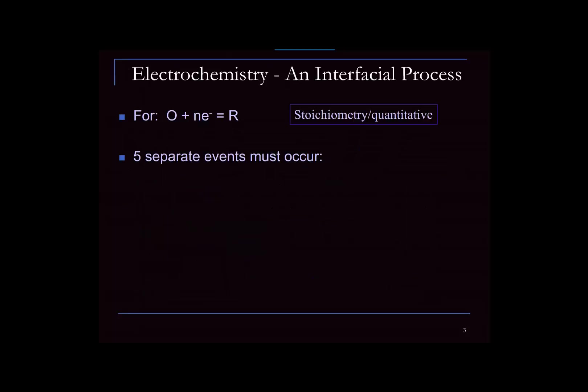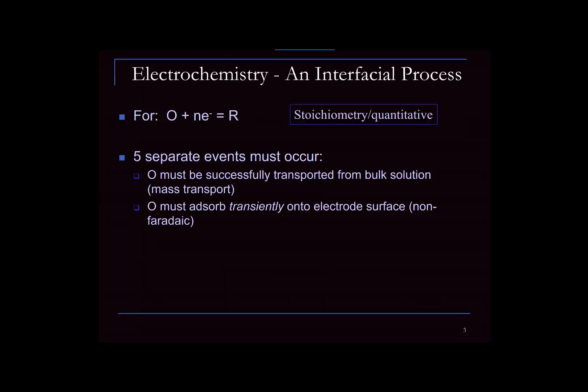Electrochemistry really is a challenging process, more challenging than I ever understood when I first got involved in it. It's a five-step process. You have some material, and the first thing that has to happen is that material must get from bulk solution to the electrode surface. There are three modes of mass transport whereby a material can be transported, and the fact there are three complicates matters — that's an important aspect.